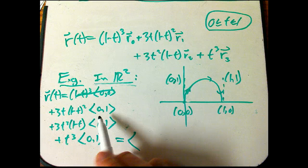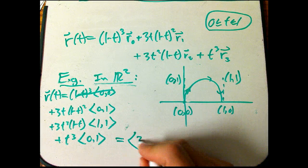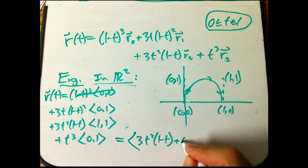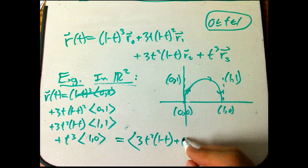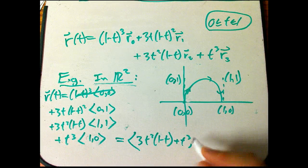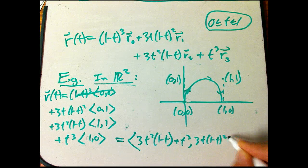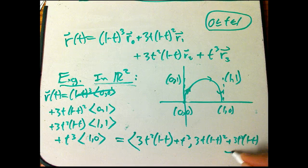So let's just figure out the components there. It happens to be that this one doesn't contribute in the first component, the x component. So it's just going to be 3t squared, 1 minus t, plus t cubed. And then here it's all three added together. 3t, 1 minus t squared, plus 3t squared, 1 minus t, plus t cubed.